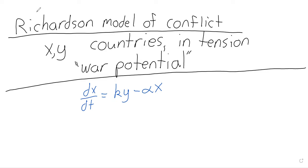There's going to be a negative alpha X term. This represents the practical reality that any country can build up its war potential by only so much. If a country is already spending 90% of its budget on the military and already has a draft, there isn't much more it can do. So this negative X term says that if the country already has a very high war potential, it will either increase slowly or maybe even start to decrease.